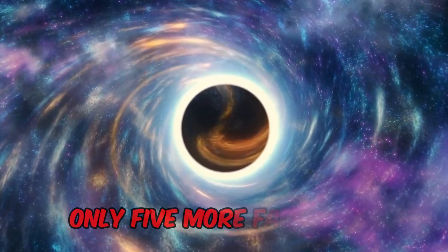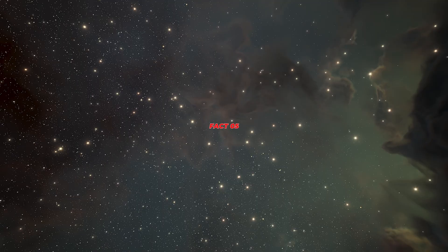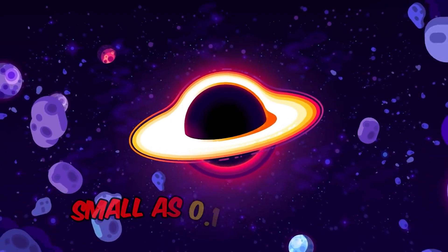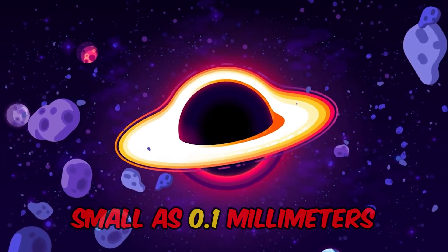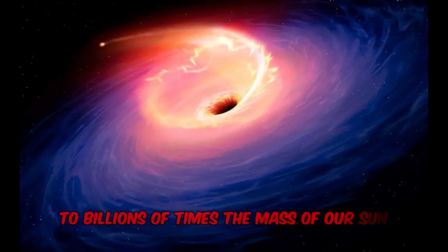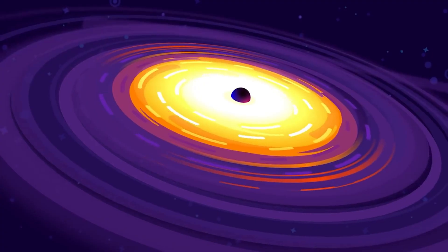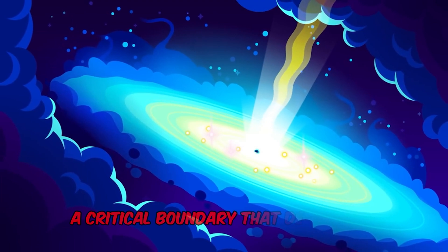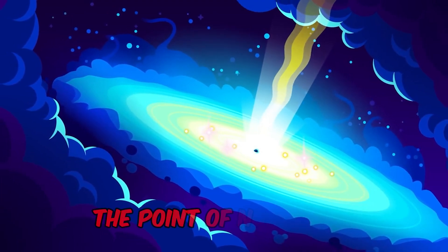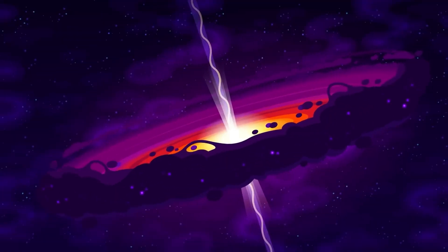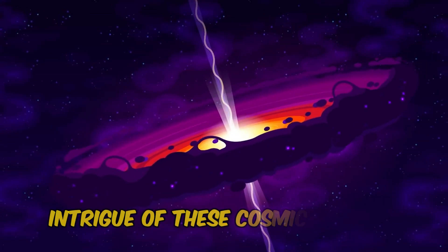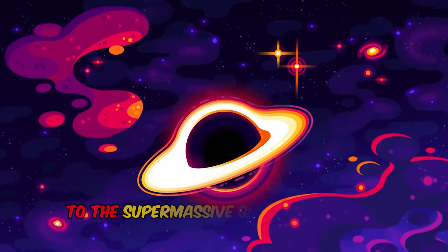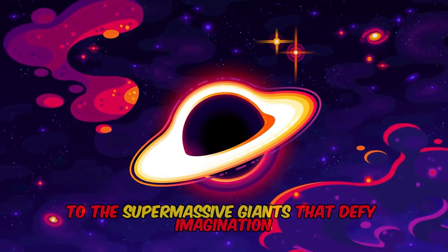Only five more facts left. What will they be? Fact number 5. Black holes can range in size from as small as 0.1 millimeters to billions of times the mass of our sun. Their size is defined by the Schwarzschild radius, a critical boundary that determines the point of no return. The diversity in their sizes adds to the intrigue of these cosmic enigmas, from the tiniest black holes to the supermassive giants that defy imagination.